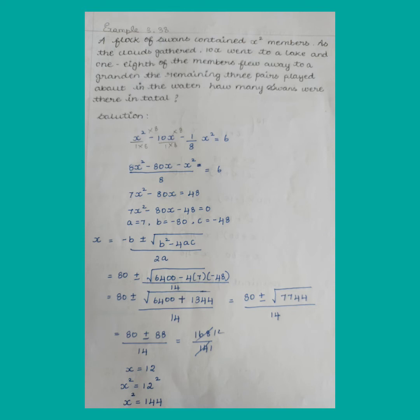x squared minus 10x, the remaining part — garden. Three pairs there. Total: x squared. x squared plus six eight.